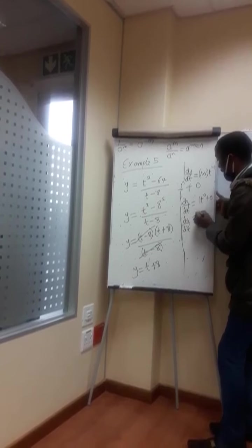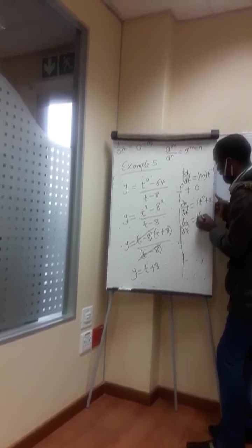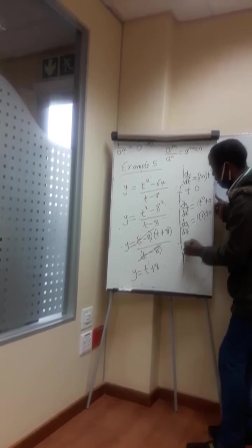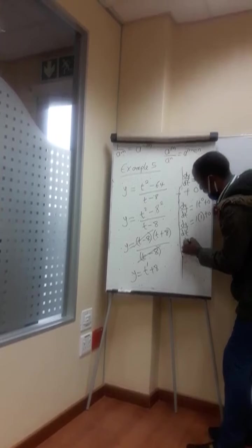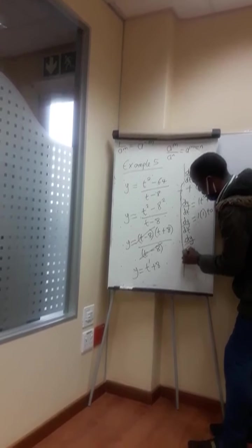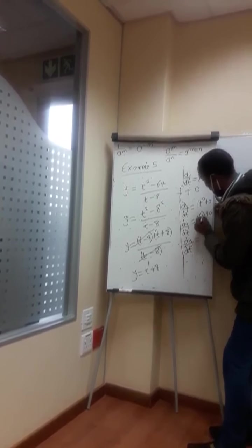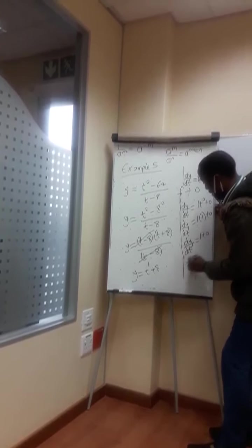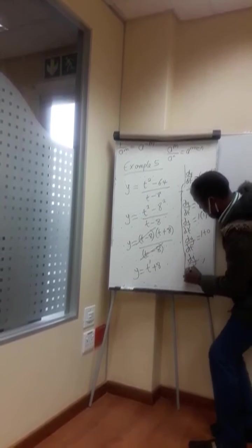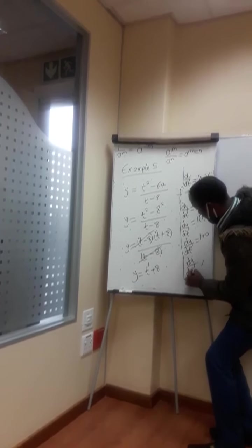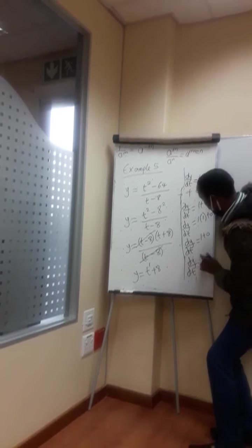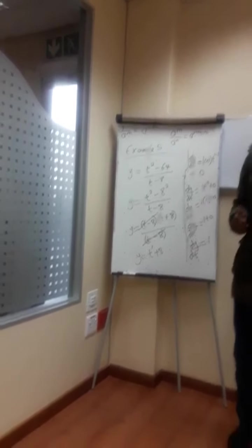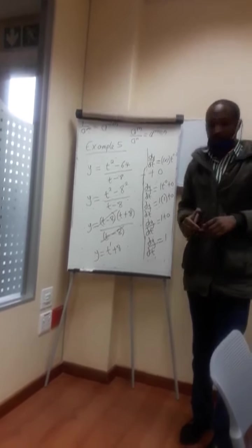Don't forget, anything raised to the power 0 is 1, so t raised by 0 becomes 1. Then dy/dt gives you 1 times 1, which is 1, plus 0. So dy/dt, which is the final answer, gives you 1. And that is the answer to this particular problem. Thank you.